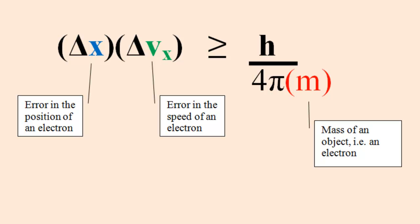On the right, h, Planck's constant, and 4 pi are constants. m is the mass of the object, for example, an electron. It could be any object for the sake of explaining this inequality.